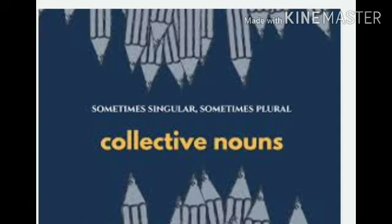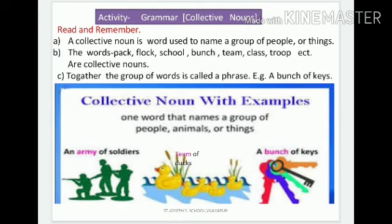Together, the group of words is called a phrase. For example, a bunch of keys — bunch is a collective noun. Collect means together, gather. So for one group, we use a particular word — that is called a collective noun. For a group of students, we call it a class.